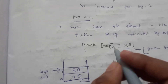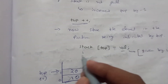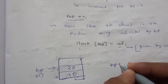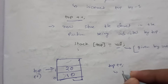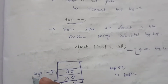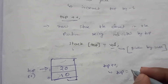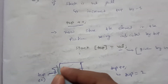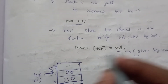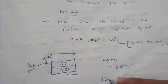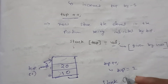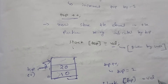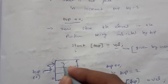Top has value 1. When we want to insert a new value, we do top plus plus, making top equal to 2. Now top is pointing to index 2 and we store stack[top] = val. Suppose the value given is 30, so 30 is stored there. That's how the push operation works.